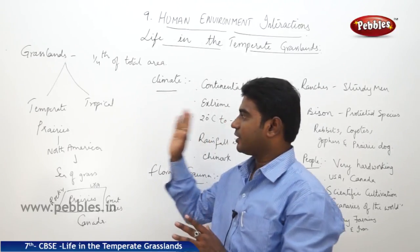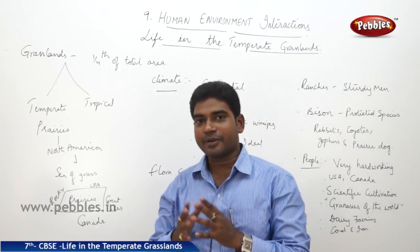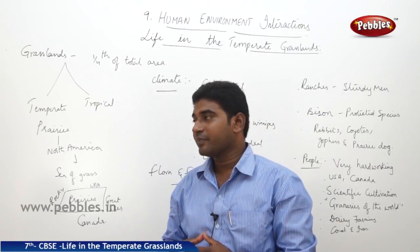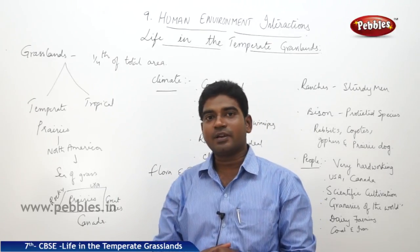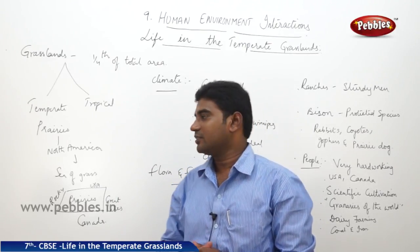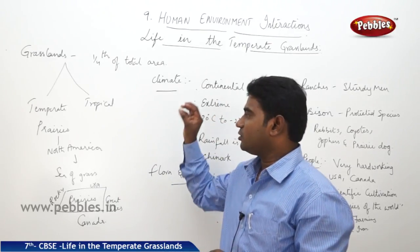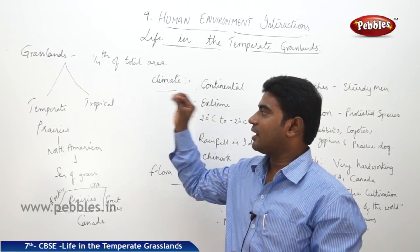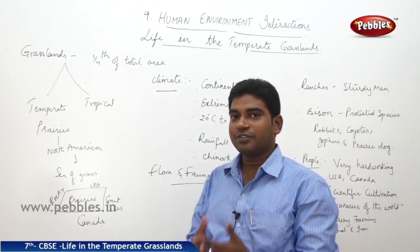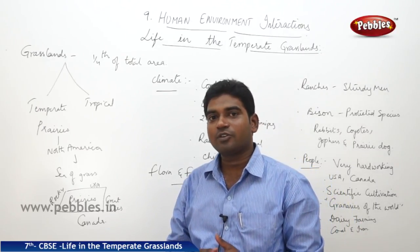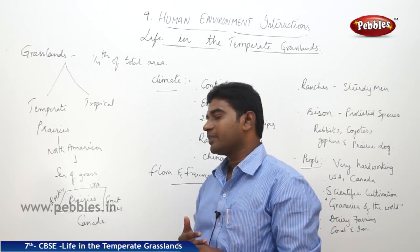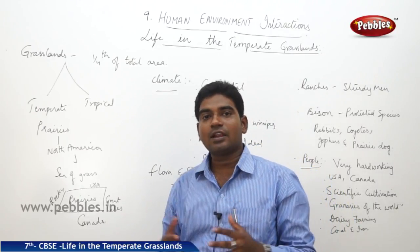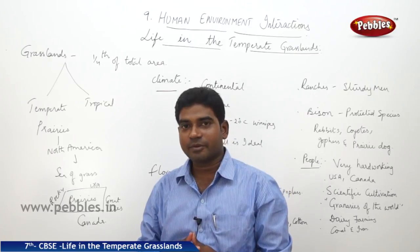First, we shall do the case study on the temperate grasslands, then we shall do on the tropical grasslands. Coming to these temperate grasslands, the first example we are going to look at is the Prairies. The Prairies are located in North America.